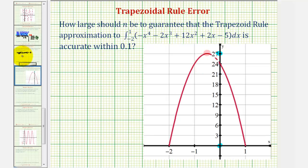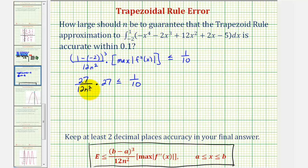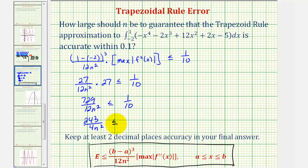Going back to the first slide, we replace the maximum function value with 27 and solve for n. We have 3 cubed, which is 27, divided by 12n squared times 27, less than or equal to one tenth. Since 27 times 27 equals 729, we have 729 divided by 12n squared less than or equal to one tenth. The fraction 729 over 12 simplifies to 243 over 4, so we have 243 over 4n squared less than or equal to one tenth.